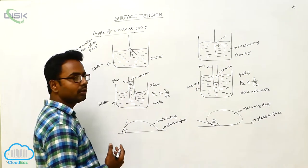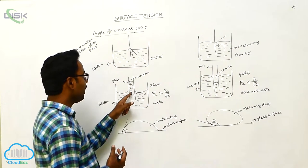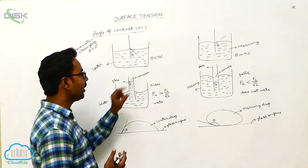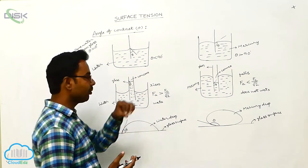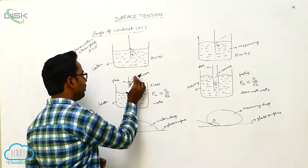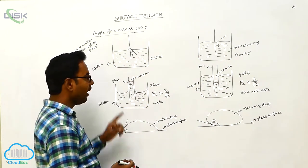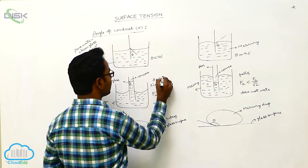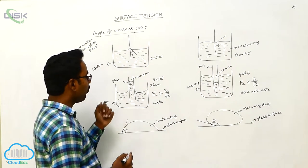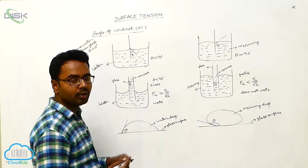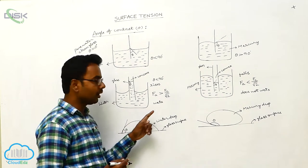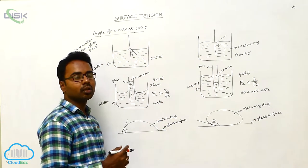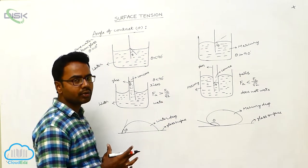The capillary tube is made up of glass, so the liquid rises in it. The meniscus formed here has a concave shape when seen from the top. The liquid level rises in the capillary tube because the angle of contact is less than 90 degrees, and also because the adhesive forces are greater than the cohesive force divided by root 2. Here Fc is the cohesive force.